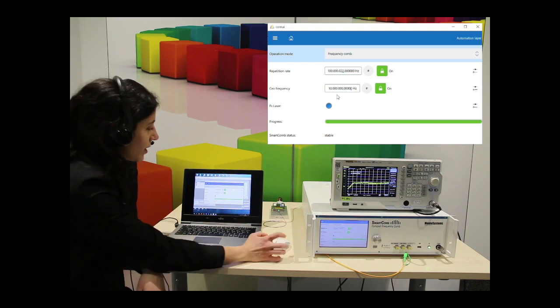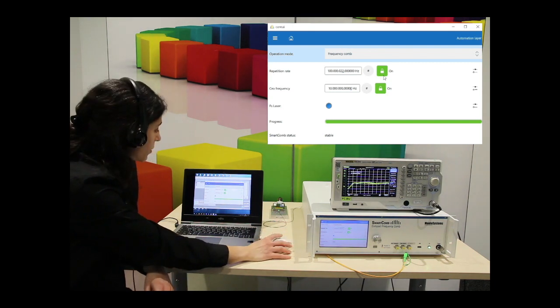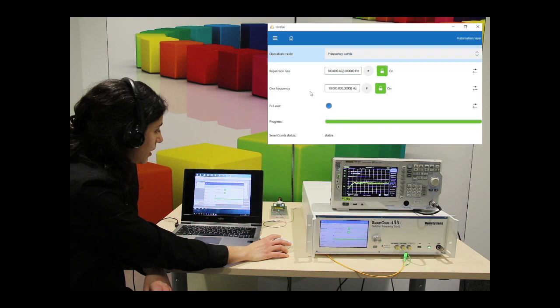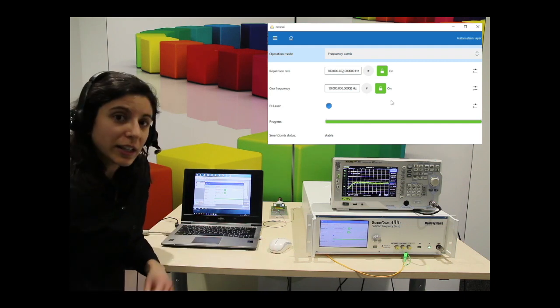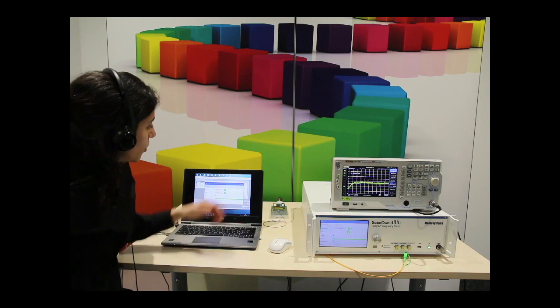While I was speaking, the repetition rate was locked and now it's fully green, ready to go. The CEO frequency is locked already. It usually takes around 30 seconds, so it's pretty fast for having both of them locked.